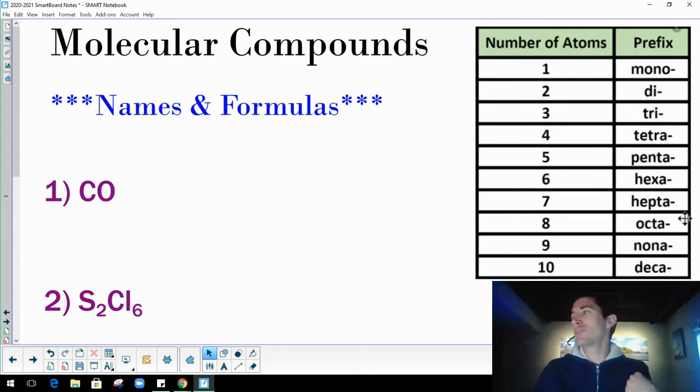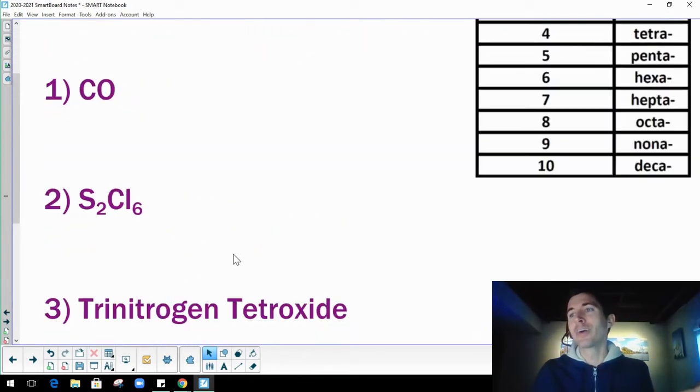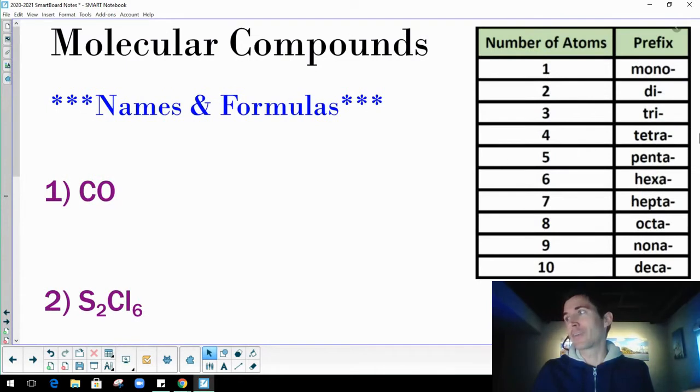Now, you're not going to see a lot of octas, nonas, and decas, just to be honest. You're going to see mostly from like mono through hepta or even mono through hexa. So that's kind of as far as I'm going to go. But you might see these other ones every once in a while, but most are going to focus on the mono through hexa, I would say, for the most part. But don't just get comfortable with those six. There's also the four other ones.